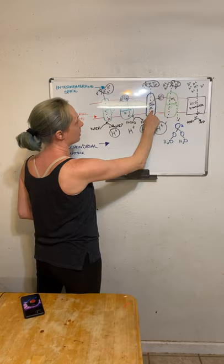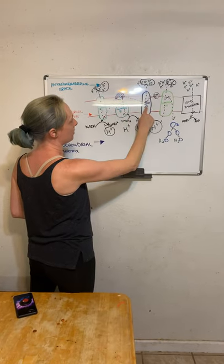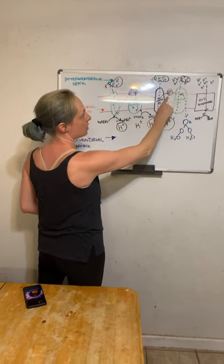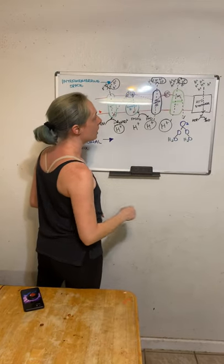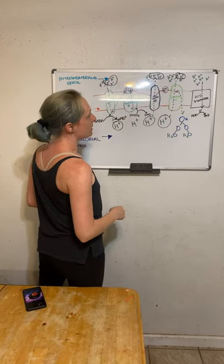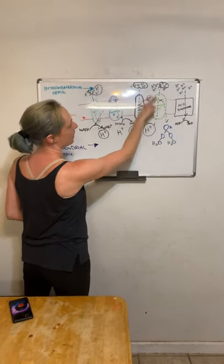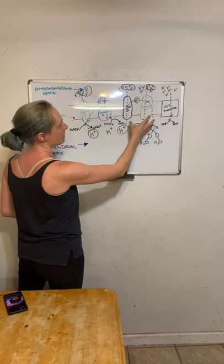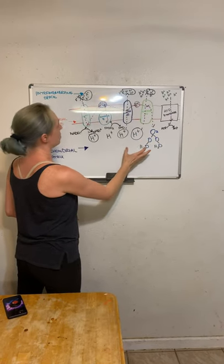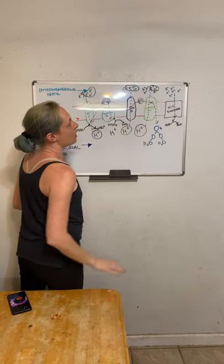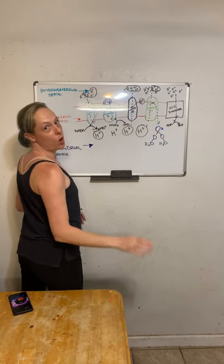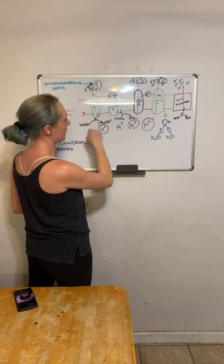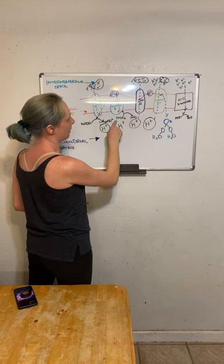The electrons that come from coenzyme Q and go into complex 3 are then transferred to cytochrome C. Cytochrome C transfers these electrons directly to complex 4, which pumps protons from the mitochondrial matrix into the intermembrane space. Complex 4 only pumps two protons per NADH or FADH2.